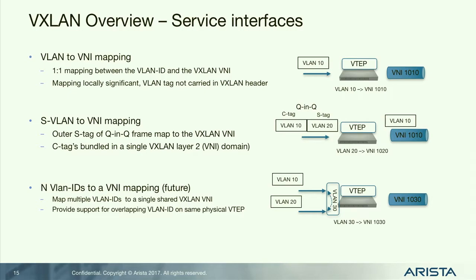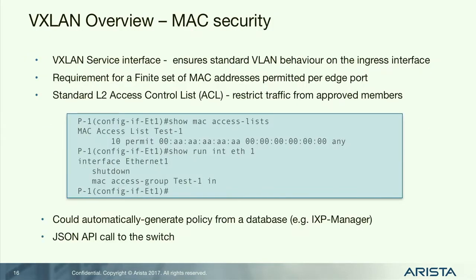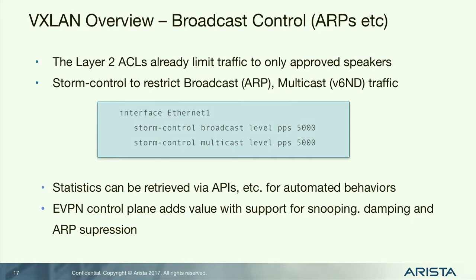You can also do Q-in-Q encapsulation: take the S-tag, map it to a particular layer 2 domain, and carry all the C-tags in the same layer 2 domain. And there's N-to-one mapping — relevant in an IXP environment where partners come in on different VLAN tags and you merge them into a single VNI so they can peer across a shared layer 2 domain. Security doesn't change — you can use standard layer 2 ACLs for port-level or MAC-level security, and broadcast limiting works exactly as today.